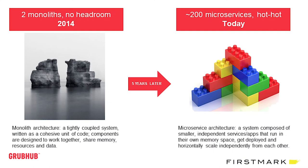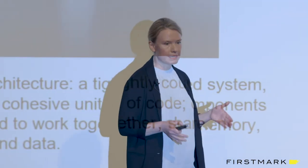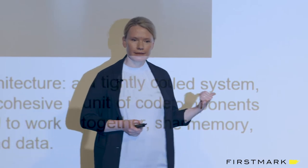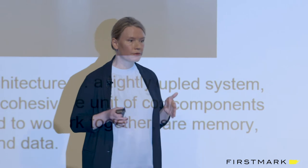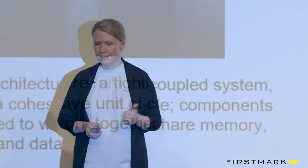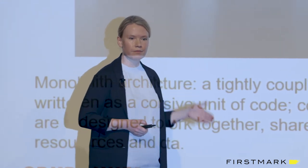I joined Grubhub in 2014. We had two monoliths: a Seamless monolith written on .NET with an 80-core SQL Server database — Microsoft told us we shouldn't be doing that at that scale anymore — and a Grubhub monolith in Java with MySQL. Remarkably identical products, remarkably identical architecture, but completely different stacks.